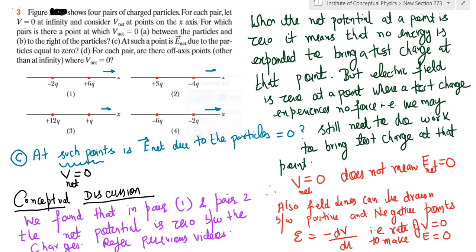Additionally, you can draw the electric field lines between a positive and a negative charge, so that also shows that electric field is not zero between one and two because it will exist, you can draw, right?